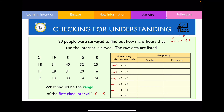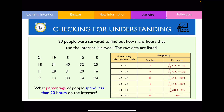Let's complete the remaining table by reporting the frequency of numbers within each class interval. To calculate the percentage, remember: frequency divided by total multiplied by 100. All percentages should add up to 100%. For the next question: what is the percentage of people who spend less than 20 hours on the internet? Looking at values below 20 hours in the frequency table, we add those two percentages together — the answer is 50%.